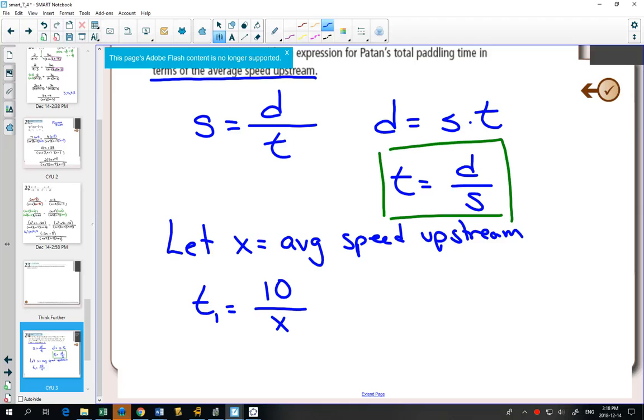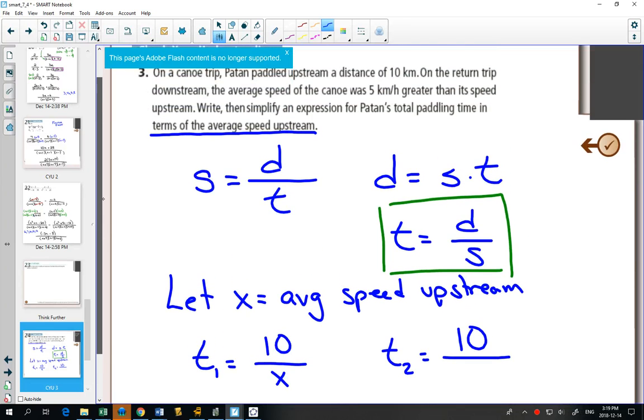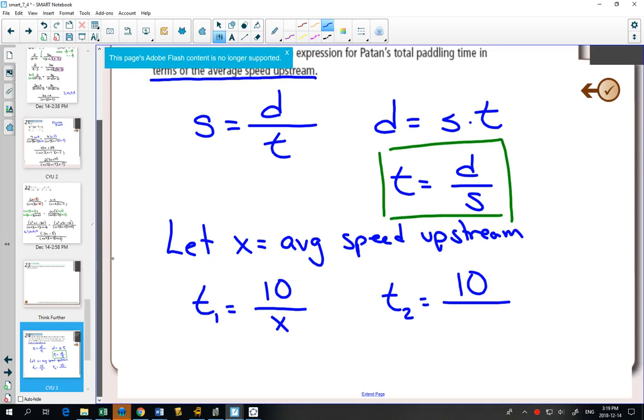Now time two, we have to come back downstream. It's the same distance, right? It's still 10. How fast is he going when he's going downstream? What does it say? Five kilometers per hour greater. X plus five.